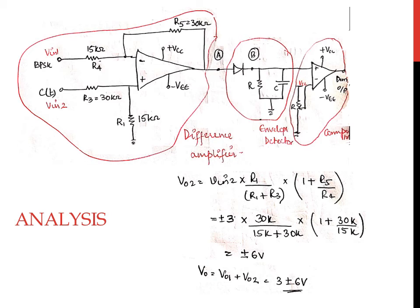Next, we apply this voltage Vout obtained at point A to the envelope detector in order to obtain the positive pulses as well as the waveform after the charging and discharging of the capacitor, which is then given as input to the non-inverting comparator. The non-inverting comparator will give a saturated output value.